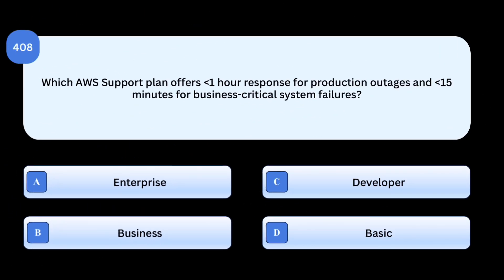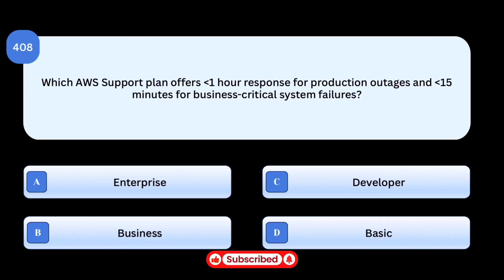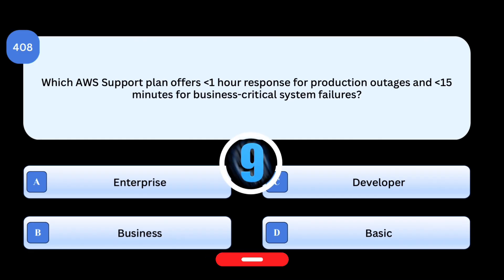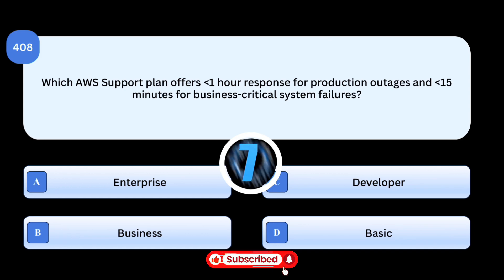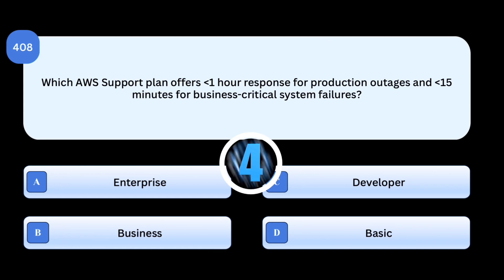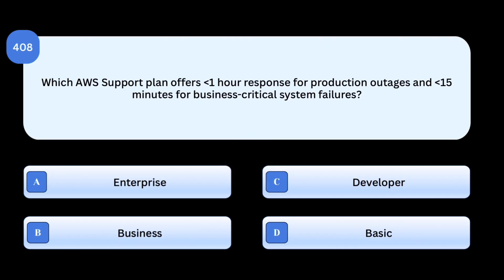Which AWS support plan offers one-hour response for production outages and 15 minutes for business-critical system failures?